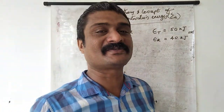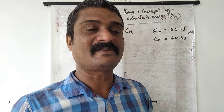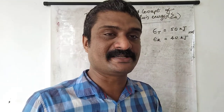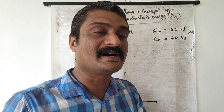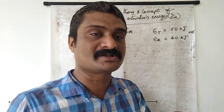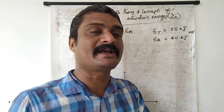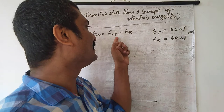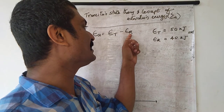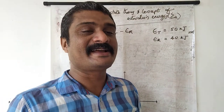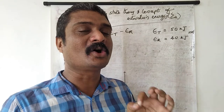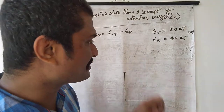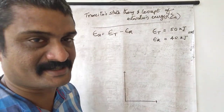That extra amount of energy — 50 kilojoules minus 40 kilojoules, which is 10 kilojoules — is called activation energy. Activation energy is the difference between threshold energy and average kinetic energy of the reactants. So activation energy is the extra amount of energy supplied to the reactant molecules to bring about a chemical reaction.